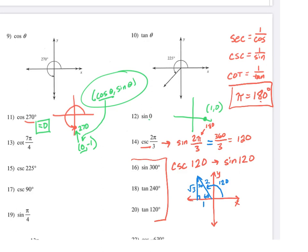So sine of 120 would be opposite over hypotenuse, which is opposite side of 60 degrees is root 3, hypotenuse is 2.